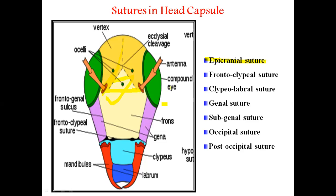The frontoclipeal suture is the suture present in between the frons and the clypeus. The clypeolabral suture is the sulcus or suture present in between the clypeus and the labrum.